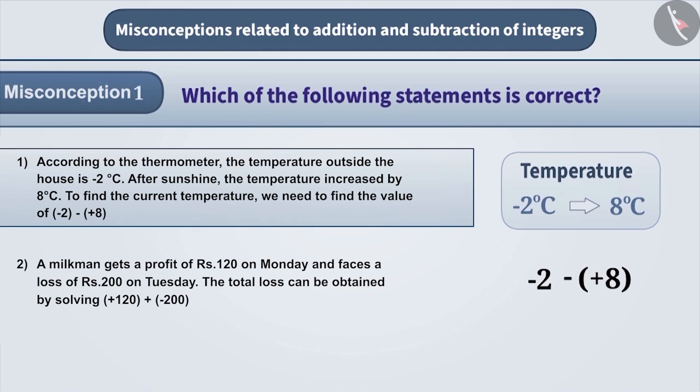This is an incorrect understanding. To find the final temperature, we need to find the initial temperature with the increase in the temperature. According to this, the expression will be minus 2 plus plus 8. Therefore, the expression is incorrect. It cannot be the answer to the given question.